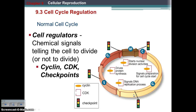Right before the cell divides, we have checkpoints called cell regulators — chemical signals telling the cell whether it's okay to divide or not. Those cell regulators are cyclin and CDK, and together they make up these checkpoints. This process stops the cell and asks: can I go on or not? We'll talk about what happens if the cell proceeds with a mistake, because there are several pathways — the cell will either try to repair itself or it won't be able to.